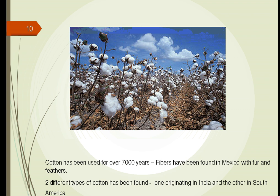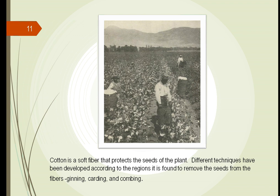One of the first plants that has been used for clothing is cotton. We have found archaeologically fibers in Mexico from at least 7,000 years ago. It seems that two different types of cotton have been found — one that originated in India and the other in South America. If you look here, you can see these white masses in the pictures, about half the size of your fist, filled with fibers as well as hundreds of seeds.